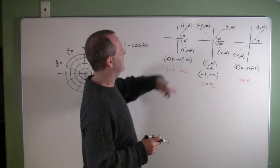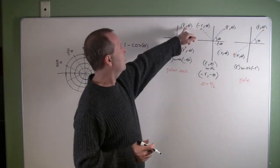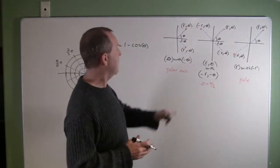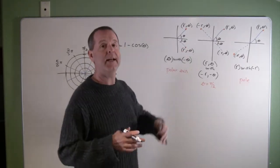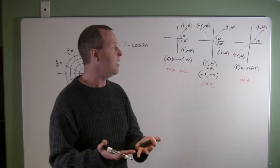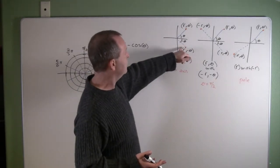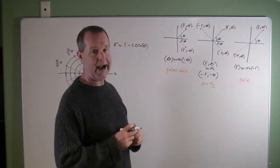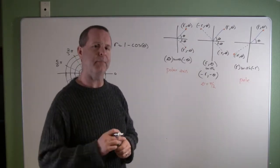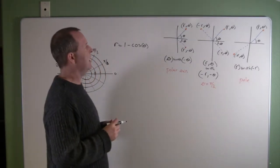One test that we have here is that if we take our polar coordinates r and theta, and if we replace them with r and negative theta and produce the same equation, then we know we have a symmetry about the polar axis. And I'll show you an example here a little bit of how that plays out.